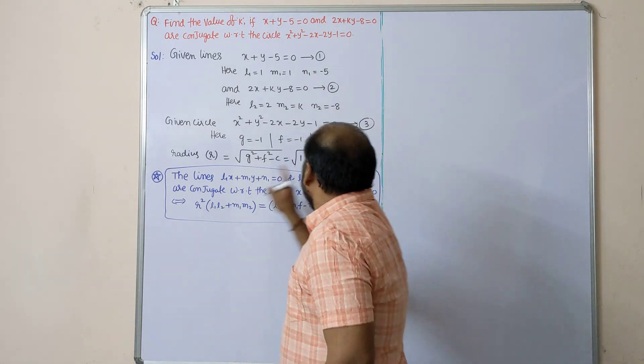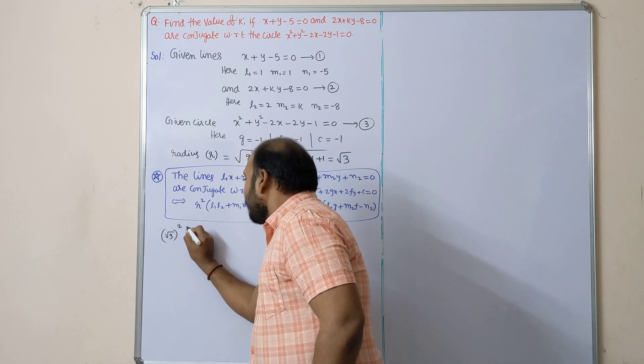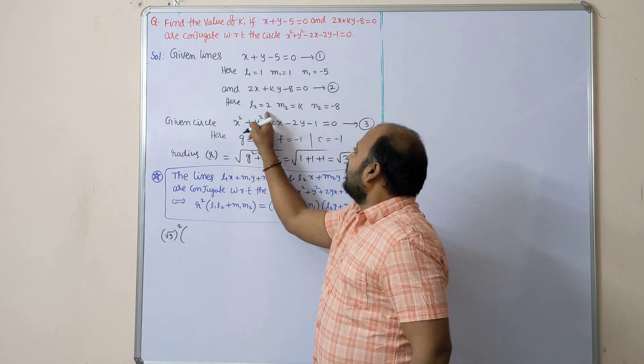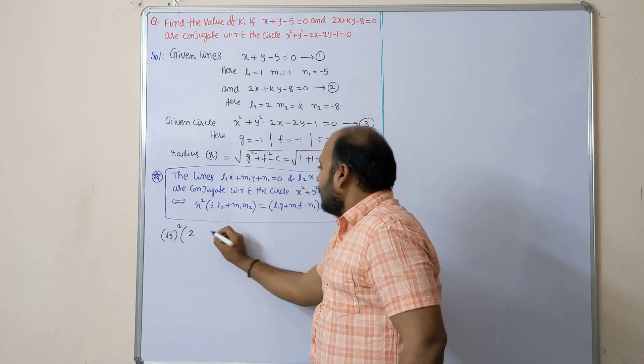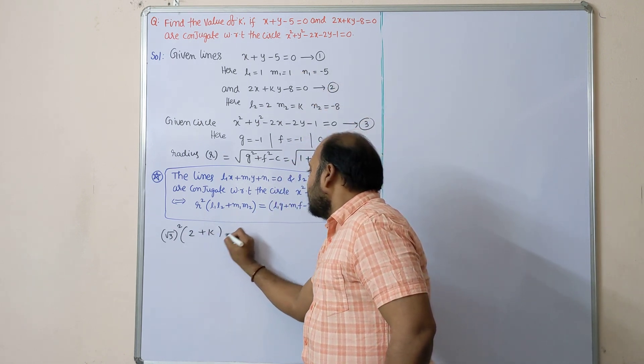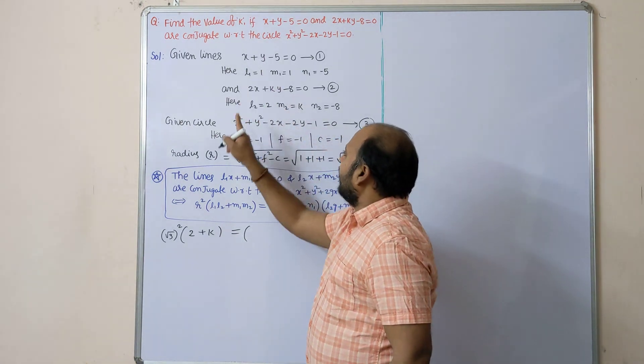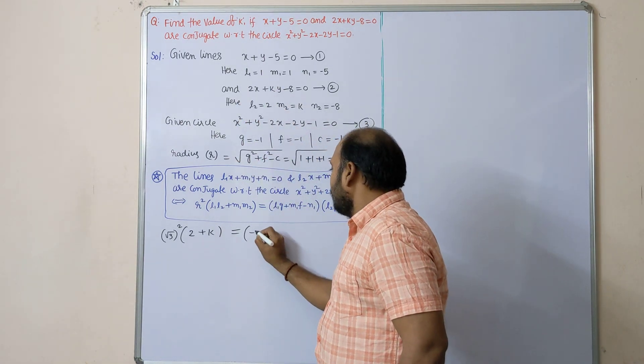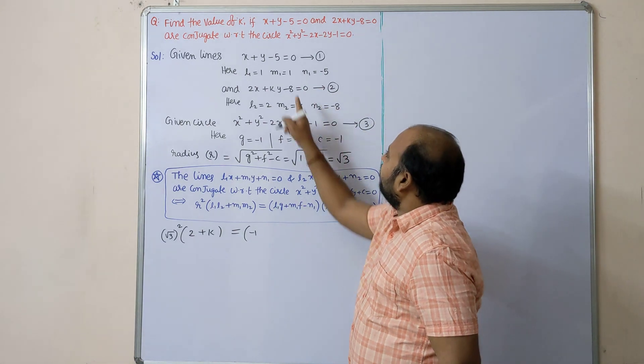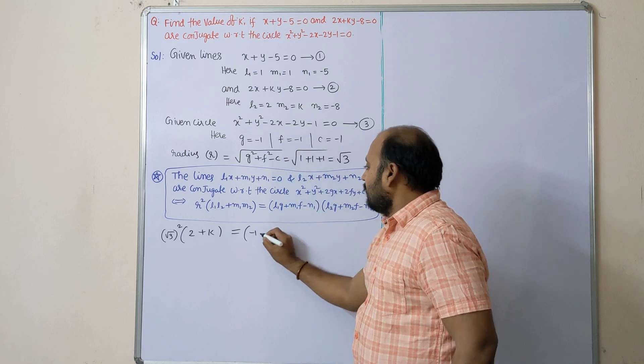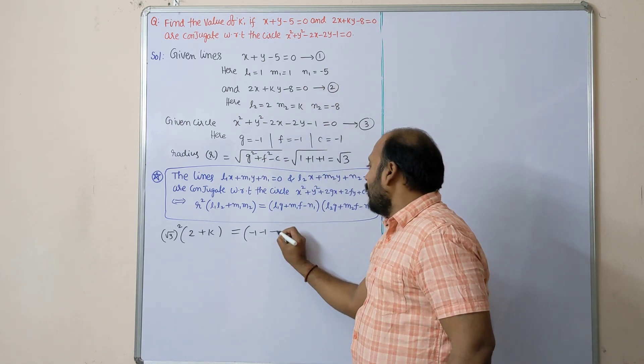r²: root 3 whole square. l1·l2: 1 × 2, m1·m2: 1 × k equals l1g plus m1f: 1 × (-1) plus 1 × (-1), minus n1 minus of -5 plus 5...